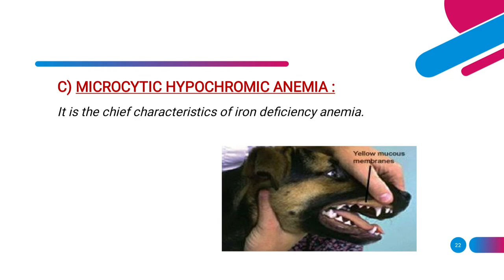The intrinsic factors secreted by gastric mucosa are responsible for absorption of vitamin B12. In case of gastric disorders, these factors are not released and vitamin B12 absorption gets hampered, resulting in anemia. In hepatic insufficiency, erythrocyte maturation factors are not stored in the liver, which also results in anemia. Microcytic normochromic anemia is seen in case of chronic diseases like tuberculosis, brucellosis, chronic interstitial nephritis, haemonchosis, poisoning due to metals, sulfonamides, chemicals, and irradiation.